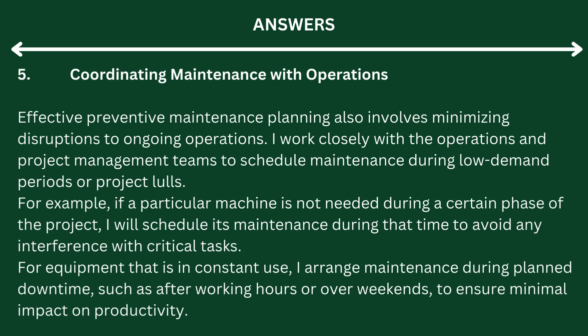Step 5: Coordinating Maintenance with Operations. Effective preventive maintenance planning also involves minimizing disruptions to ongoing operations. I work closely with the operations and project management teams to schedule maintenance during low-demand periods or project lulls. For example, if a particular machine is not needed during a certain phase of the project, I will schedule its maintenance during that time. For equipment that is in constant use, I arrange maintenance during planned downtime, such as after working hours or over weekends, to ensure minimal impact on productivity.